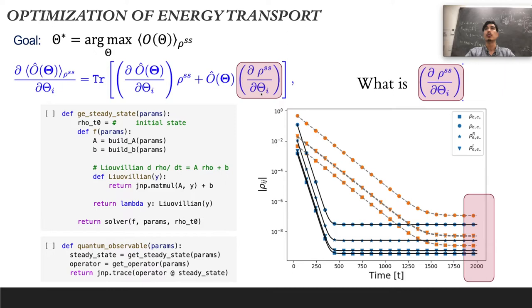Only for a few cases we have a closed form of the steady state dependency with the parameters. However, for the majority of physical simulations, the steady state is solved numerically by some sort of numerical solver. So the question is, how do we know how much the solution of this numerical solver changes with respect to the internal parameters?